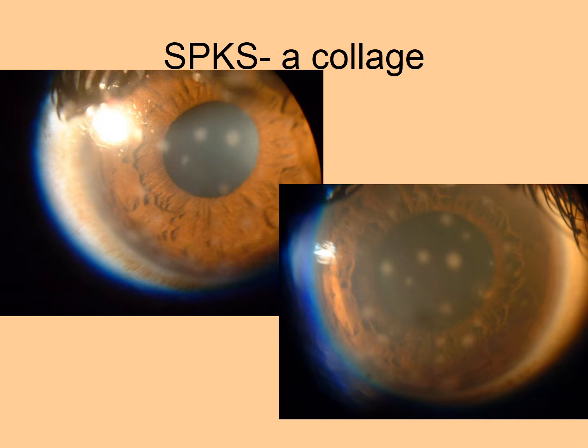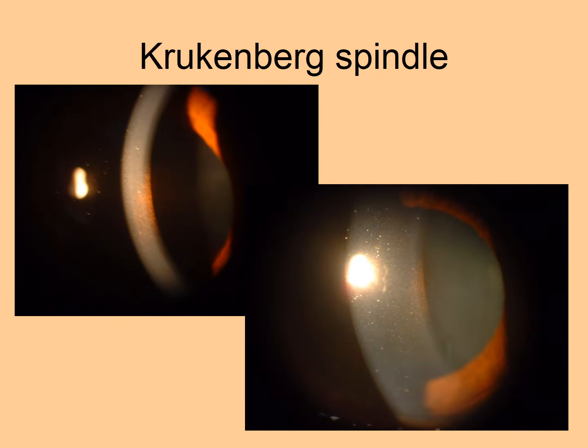Here we see more superficial punctate keratitis: the upper left is in broad focal illumination, the lower right is in sclerotic scatter, and it can also be seen in focal slit illumination. Here is a Krukenberg spindle with a narrow beam showing it is at the level of the endothelium, a broad beam highlighting its extent, and retro illumination and retro illumination against the red glow.